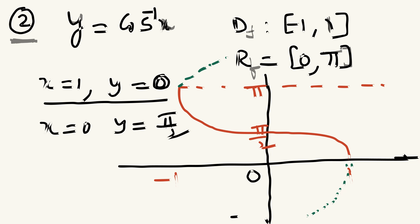Let us see what are the points on the graph. If x = 1, then y = 0, so the angle is 0 degrees — point (1, 0). If x = 0, then y = π/2 — second point (0, π/2).